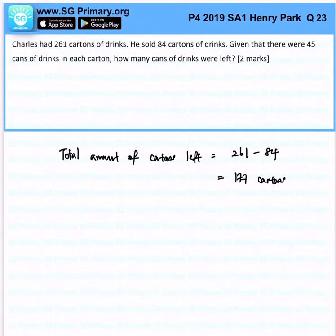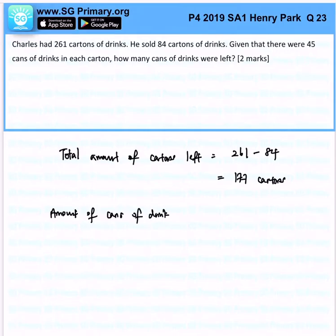Now, we know that in each carton there are 45 cans of drinks. So immediately, amount of cans of drinks left: 177 times 45.